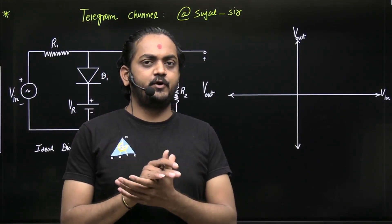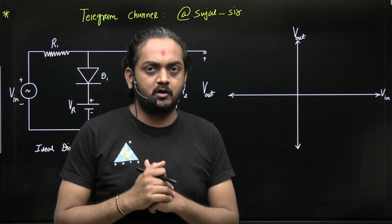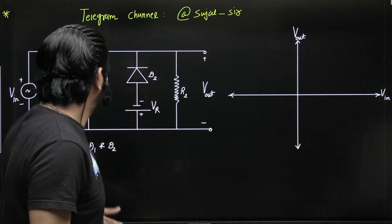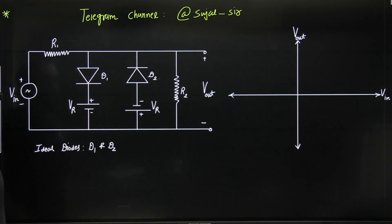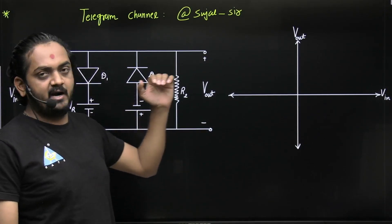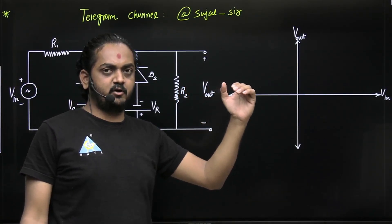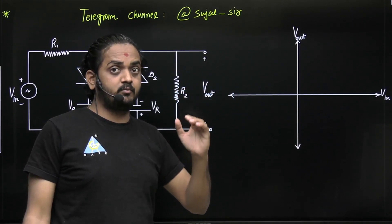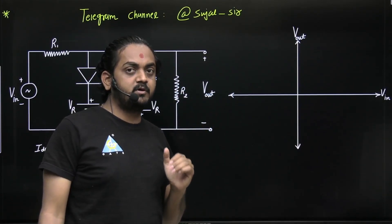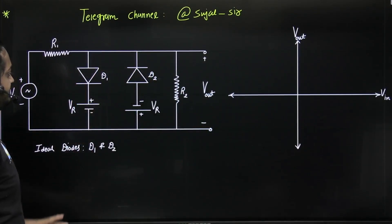Hello dear students, in this video I will provide you an important shortcut for the two level clipper circuit. This is the two level clipper circuit. It will clip the positive part for a certain portion of the positive cycle of the input signal and a certain portion of the negative cycle of the input signal.